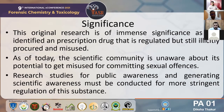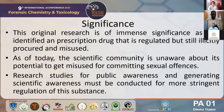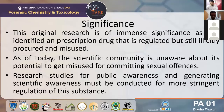Coming to the significance: this original research is of immense significance as it identifies a prescription drug being misused. To procure Pregabalin, a doctor's prescription is required, and it is now evident that these drugs are illicitly procured and misused in our country. The scientific community is currently unaware of its potential to be misused specifically for committing sexual offenses. There is a high need for research to generate public and scientific awareness. Pregabalin also falls under the category of designer drugs, where slight modifications in the structure of the parent compound can produce a series of analogues with increased potency.